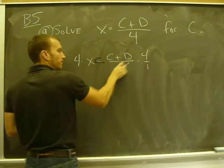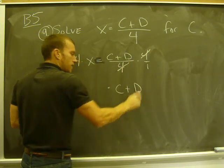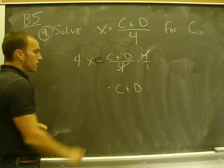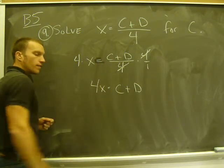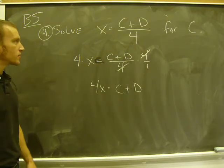When I do that, on the right-hand side, my 4s cancel out. I'm left with C plus D. And over here, 4 times X, 4X. So in one step, I've cleared the fraction, and now I'm one step from my solution.